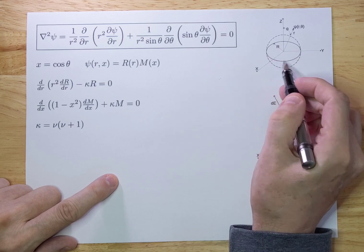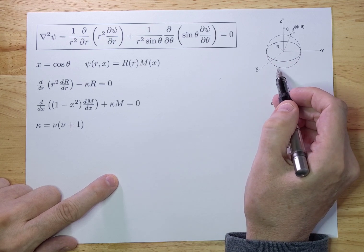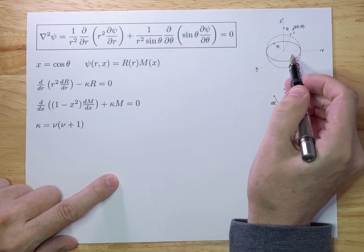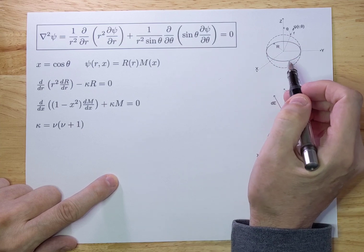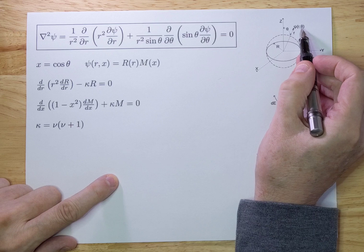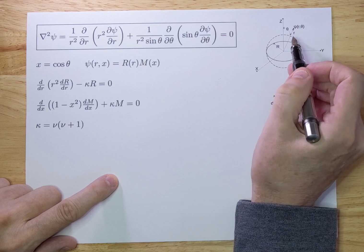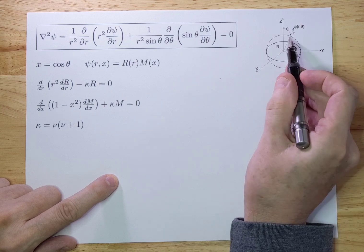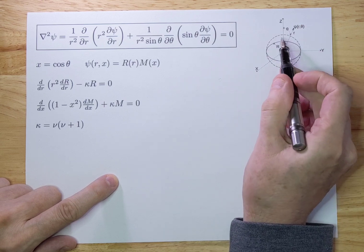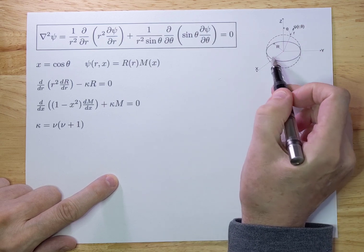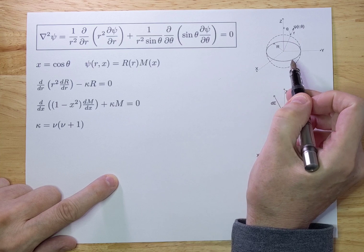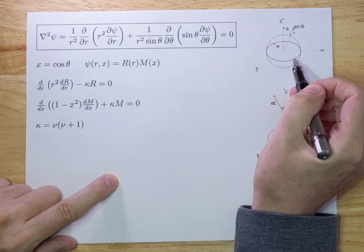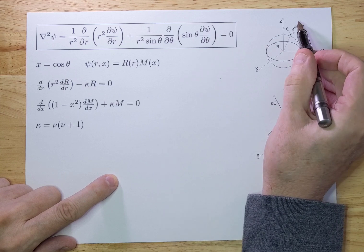The ring is located in the XY plane. In the XY plane you have a ring, and you're going to ask yourself what the potential will be at a certain point in space — that could be inside the ring or outside the ring. When we look at the solution, we're going to split it up into a solution inside the sphere and a solution outside the sphere.